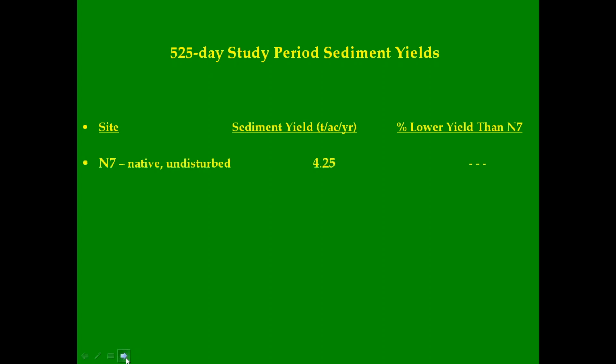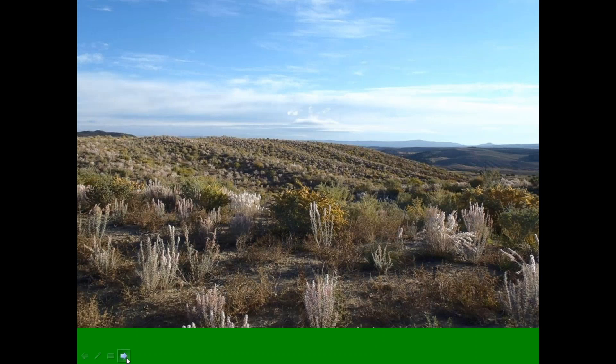The study sediment yield values are presented in a table for the three sites in tons per acre per year and percentage less than native. The native undisturbed site produced the greatest sediment yield at 4.25 tons per acre per year. The Geofluv reclamation site with moderate vegetation yielded 13% less sediment than the native site. The well-vegetated Geofluv reclamation yielded only 2.52 tons per acre per year — 41% less than the native site. This constructed Geofluv design shows how the complex landform provides variation in sunlight and water harvesting, supporting natural vegetation diversity.